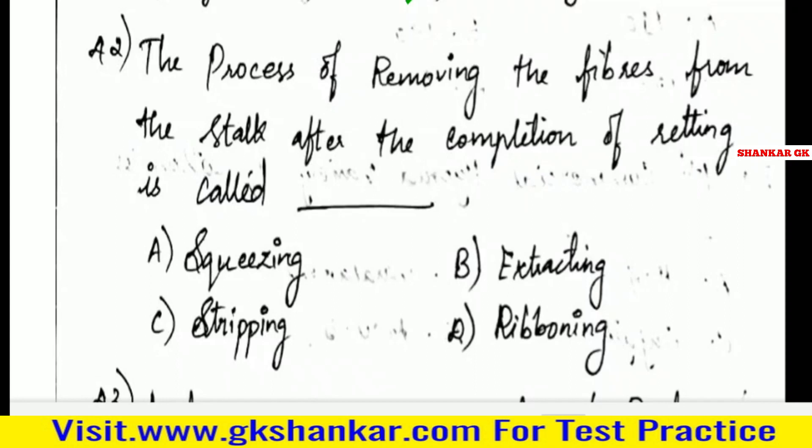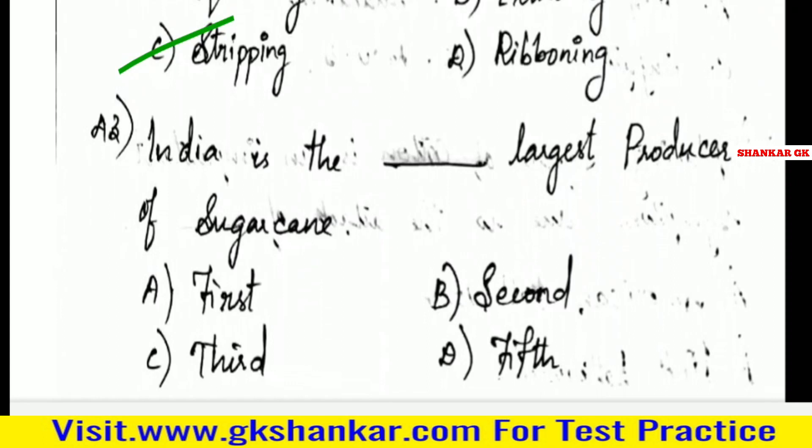Forty-second question: The process of removing fibers from the stack after completion of retting is called — A. Excusing, B. Extracting, C. Stripping, D. Ribboning. Answer: C. Stripping.